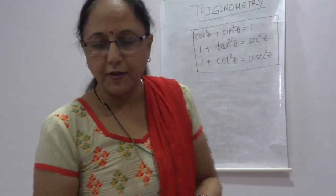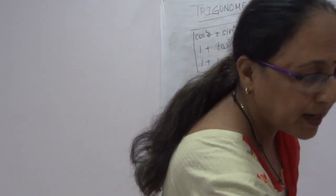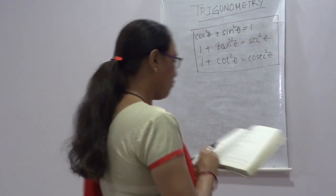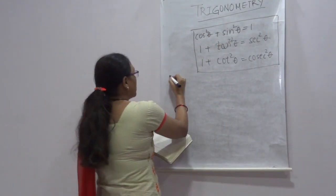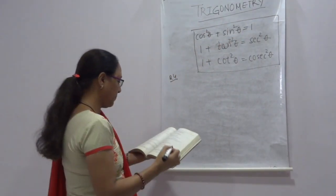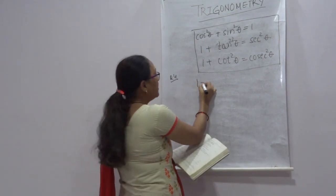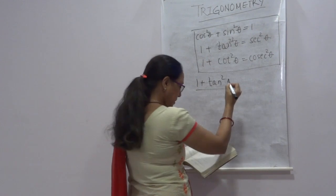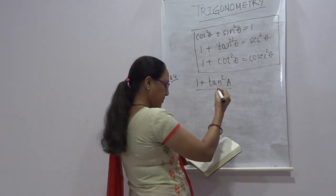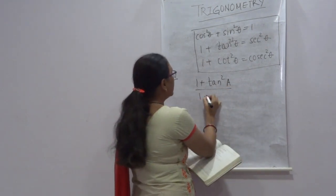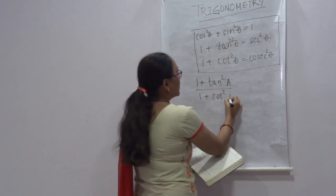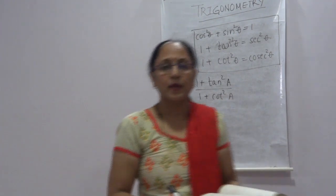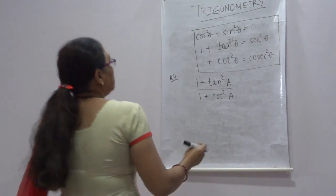Now we move to the questions based on these identities. First, I am taking Question Number 4 — choose the correct option. What is the 4th part? It is: (1 + tan²θ) / (1 + cot²θ). Can you do this question? Try it in your copies.